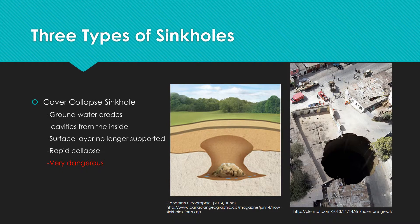The third type of sinkhole is the cover collapse sinkhole. These are formed when underground reservoirs contain acidic water and deteriorate the bedrock from the inside out. A cavern is formed under the surface layer, which is not visible from the top. The land above eventually becomes too weak to support itself or surrounding structures and will collapse. This type of sinkhole has been known to cause tragedy and can be very dangerous.